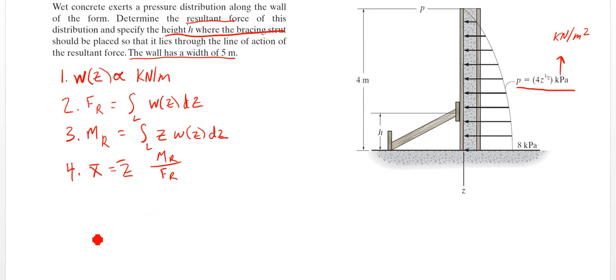So that's our approach. Getting started, step 1. W(z) is going to equal our depth, so our 5 meters, times our existing equation, 4z to the 1 half. Excuse me, 4 of z.